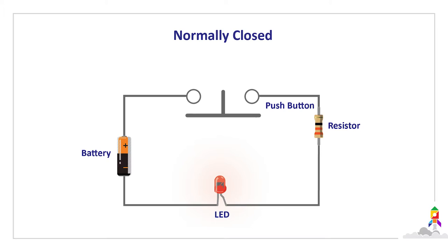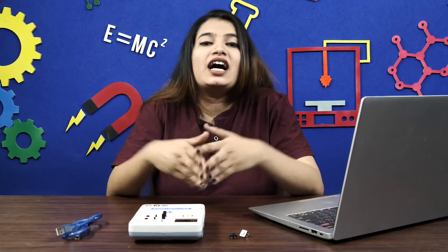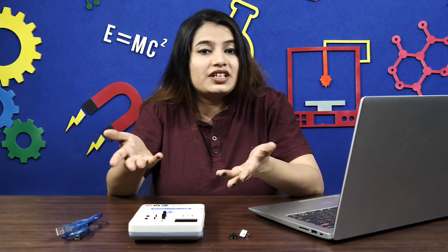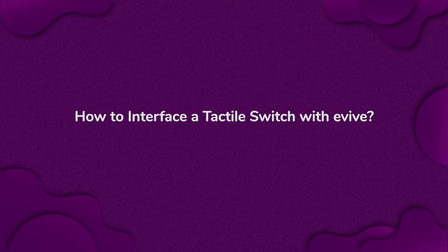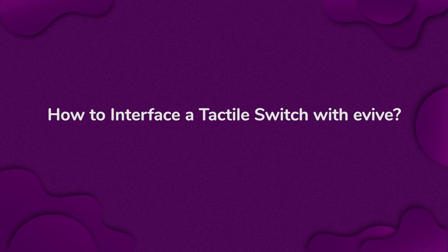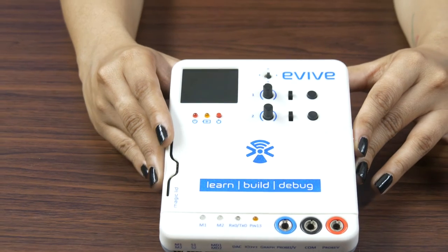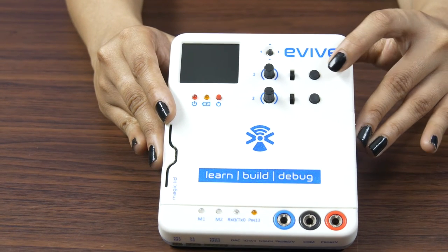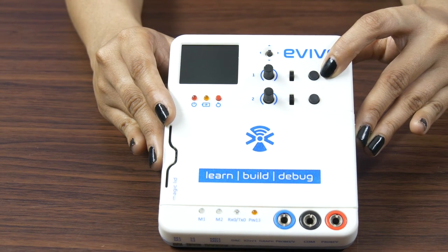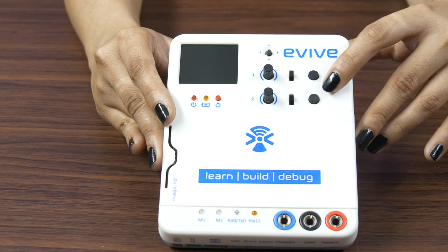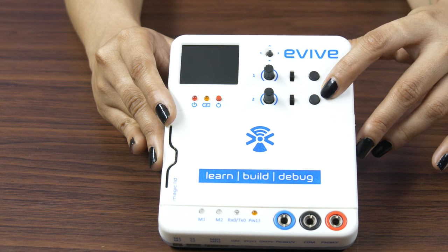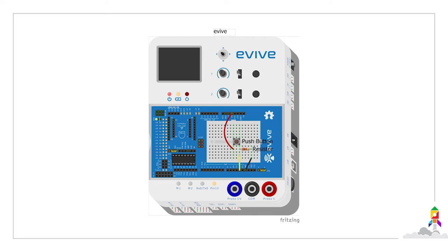Now that we know how the push button works, let's have a look at how to interface it with Evive and see them in action. Evive already has two push buttons internally connected to digital pin 38 and pin 39. However, if you want to connect an external push button, you can make a circuit like this on Evive's breadboard.